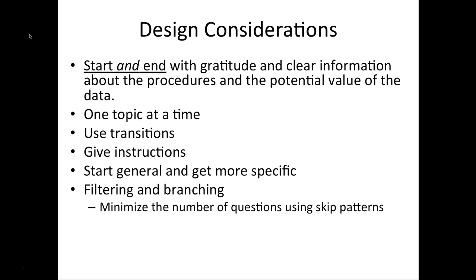Filtering and branching is a really key piece of survey design. These are functions within survey software that allow you to skip over questions that might not be relevant to people. For example, if you ask people how many sexual partners they've had in the last three months and the answer is zero, you wouldn't go on to ask them about condom use — you know the answer will be zero. Being able to branch and filter the survey appropriately makes the experience better for your respondents.